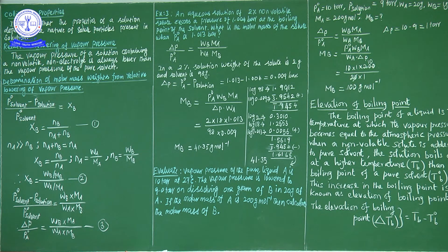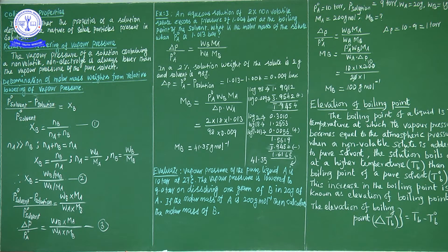The first colligative property is relative lowering of vapor pressure. These colligative properties are used to determine the molar mass of the solute. The relative lowering of vapor pressure was already studied using Raoult's law in the last class. Before studying it further, let us recall vapor pressure. Vapor pressure is studied in the solution state — we see how vapor pressure is produced.